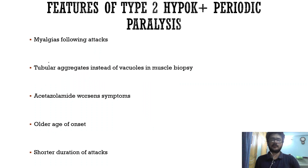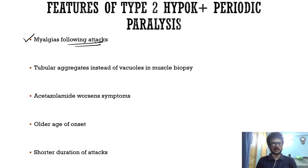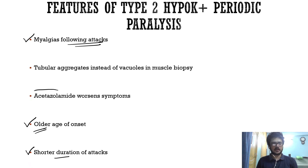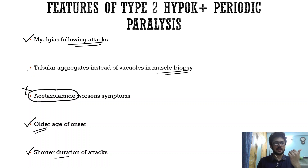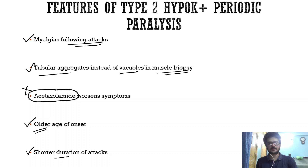Clinically, Type 2 hypokalemic periodic paralysis can be suspected when patients have myalgias following attacks, an older age of onset, and shorter duration of attacks. Importantly, acetazolamide — used for Type 1 — can worsen or trigger attacks in Type 2 and must be avoided. On muscle biopsy, Type 2 shows predominantly tubular aggregates instead of vacuoles.